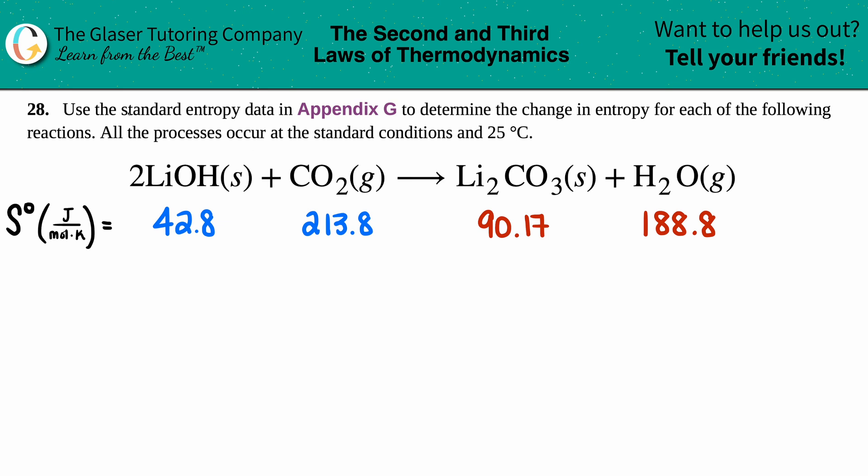Number 28: Use the standard entropy data in appendix G to determine the change in entropy for each of the following reactions. All the processes occur at standard conditions and at 25 degrees Celsius.